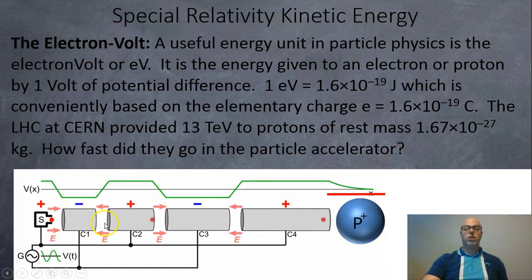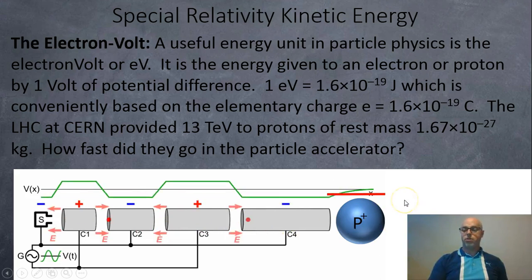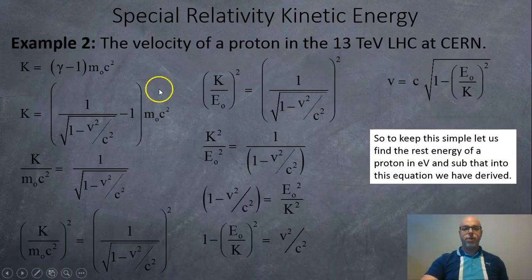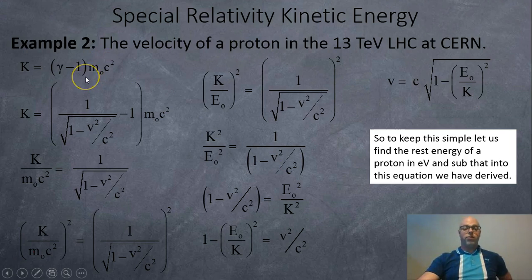The proton comes in, accelerates, accelerates, accelerates, and it gets really fast. Here's the kinetic energy formula again, but this time we're actually looking for the speed. So we have to rearrange this equation for the speed. I plug in the gamma factor and we're going to isolate for v. What I do is take m₀c² and divide it to the other side, and then I square both sides to get rid of the square root. Now I have k² over m₀c² squared.